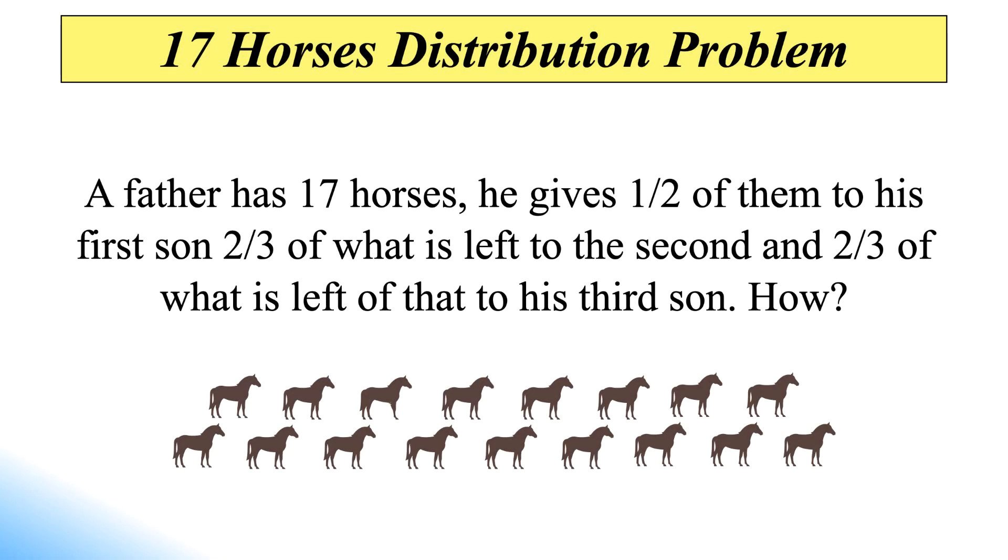Hello logical people, this is Venkatesh. Here is an interesting riddle. The riddle states that a father has 17 horses. He gives half of them to his first son, two-thirds of what is left to the second, and two-thirds of what is left of that to his third son.